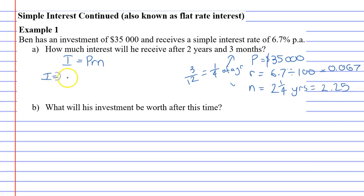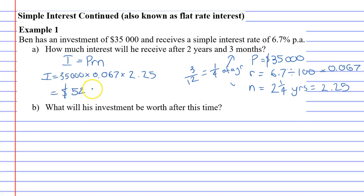Now we go back to our formula to calculate our interest. We take our principal, the 35 grand, multiply it by R, 0.067, and then multiply it by the number of years, which is 2.25. Grabbing my calculator: 35,000 times 0.067 times 2.25. That gives me $5,276.25.